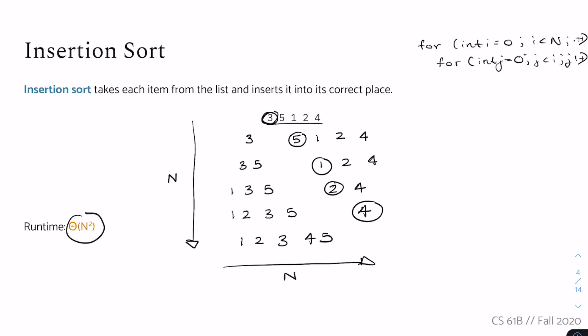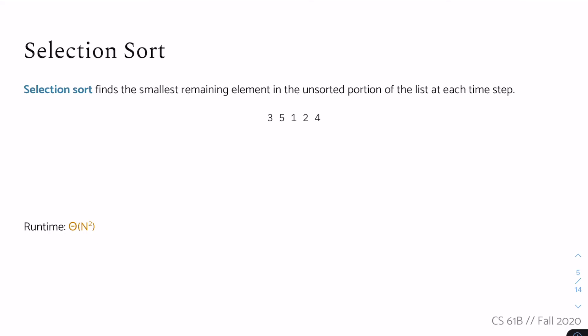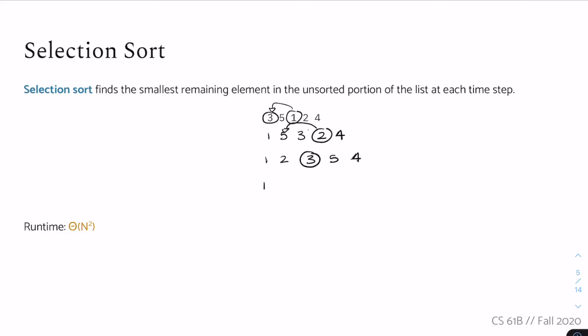The next sort is selection sort. Selection sort finds the smallest remaining element in the unsorted portion of the list at each step. It looks through, finds the smallest element, pulls it to the front, and swaps it with the item currently in that position. For example, first we find one and swap it with three, giving us one, five, three, two, four. Then we find two and swap it with five, giving us one, two, three, five, four. Three is already in place so we don't do anything.